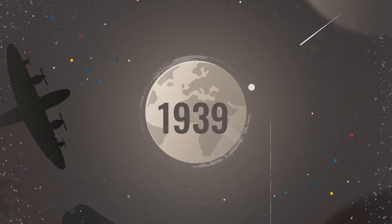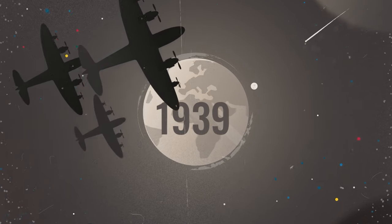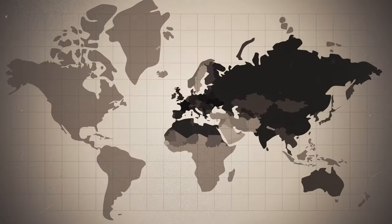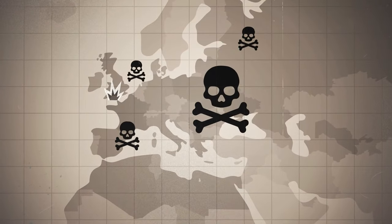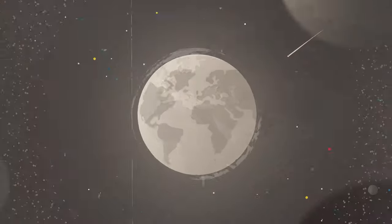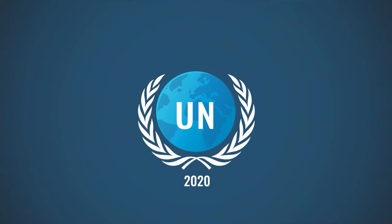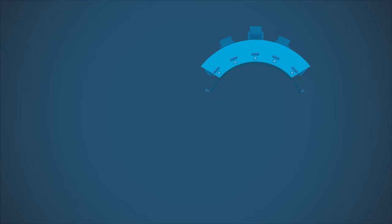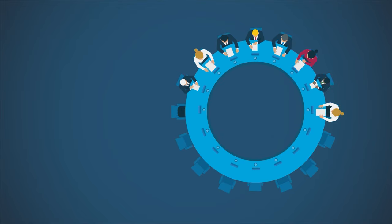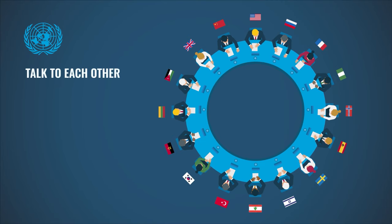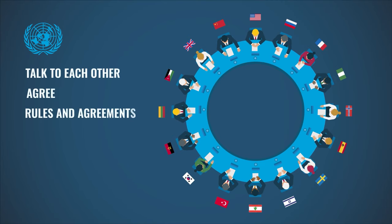The Second World War caused enormous destruction and left large parts of the world in ruins. That's why the United Nations was established with one main target: to prevent war in the future. The UN is a meeting point where leaders from all around the world can interact, and countries try to agree on which rules and agreements should apply in the world.